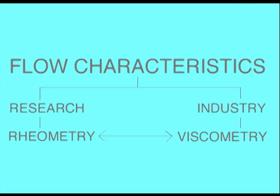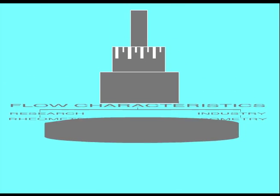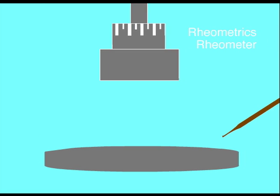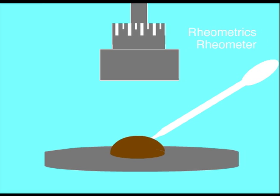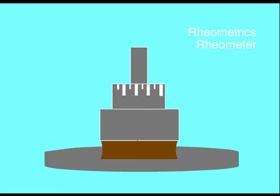In research and industry, rheometry and viscometry are used to determine the flow characteristics of chocolate. For molten chocolate, a rate ramp on a parallel plate rheometer is used to find the apparent viscosity of a sample at different shear rates.